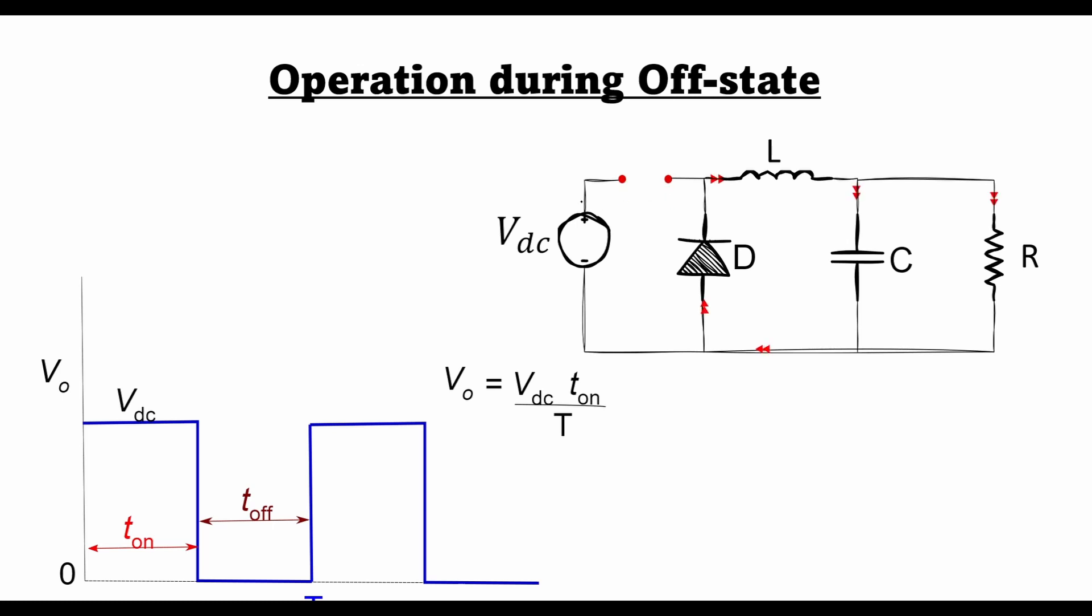In this case no current flows from the supply towards the output. However, the current in an inductor cannot change instantaneously, therefore the inductor has to reverse the polarity across its terminals.